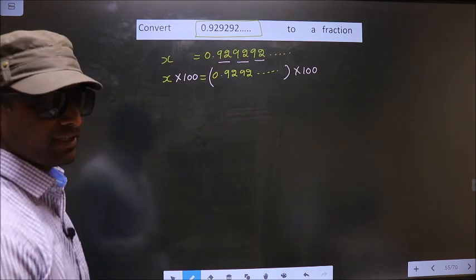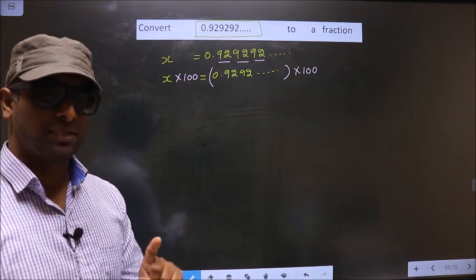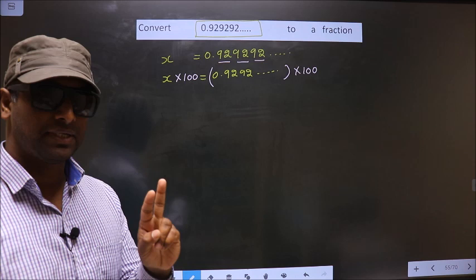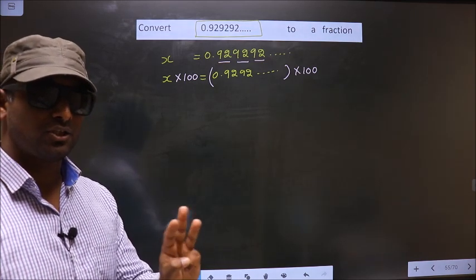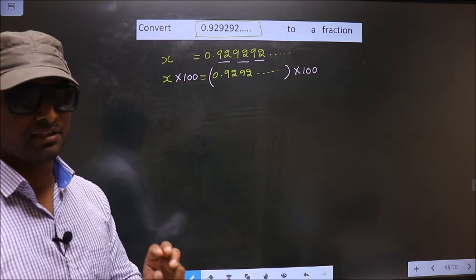I repeat. Whenever one number is repeated, you should multiply by 10. Had it been two numbers, multiply by 100. Had it been three numbers, you should multiply by 1000.